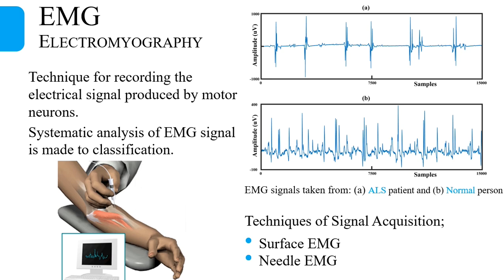The design of an accurate classification system becomes challenging due to the huge variability of EMG signals within a class. This variability is introduced into the EMG signal when it is taken from different muscles and with different levels of needle insertion.